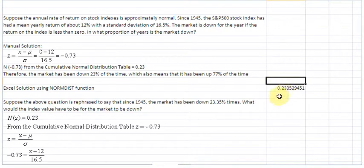And there we have it, 0.2335 is the probability, or 23.35% is the probability that the market will be down, or the index value will be less than 0.